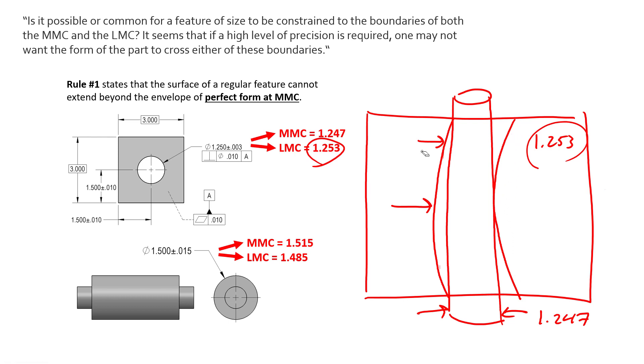We'll show kind of why we care about controlling form to an envelope of MMC. If we picture this part being assembled, if we're trying to manufacture the mating part or the mating feature, there's a pin that comes through here.